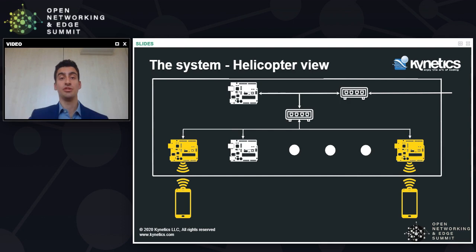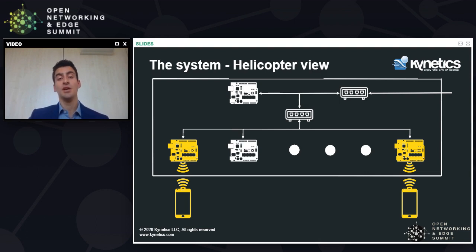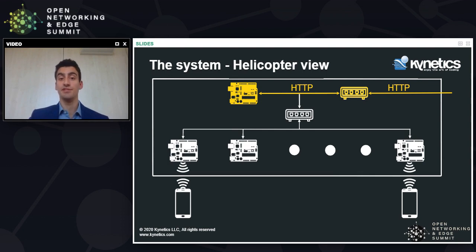An important thing to notice is that the entire cluster is physically inaccessible by end users — they won't have any physical access to the boards. Also, the workers are completely isolated within an internal network and won't have any internet connection. Remember this point because it will be important when we talk about the deployment model. The only means of interaction with end users is a set of APIs exposed through an HTTP interface, and workers also communicate externally using Bluetooth.